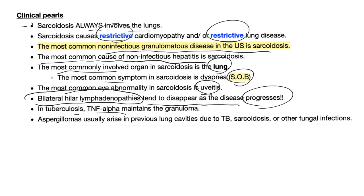In TB, TNF-alpha maintains the granuloma, which is a caseating (cheesy) granuloma in tuberculosis. Aspergilloma usually arises in previous lung cavities — on top of TB, on top of sarcoidosis, or on top of other lung infections such as histoplasmosis, blastomycosis, coccidioidomycosis, or paracoccidioidomycosis.